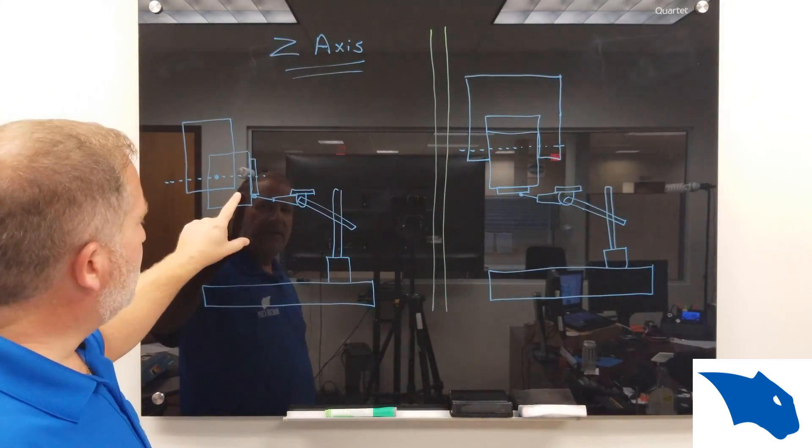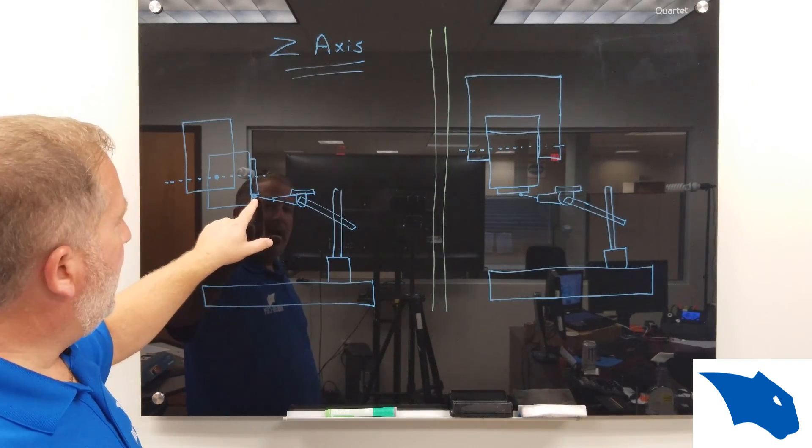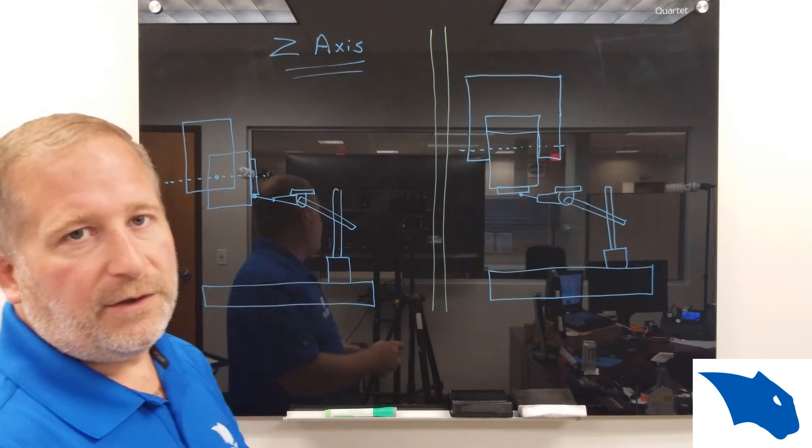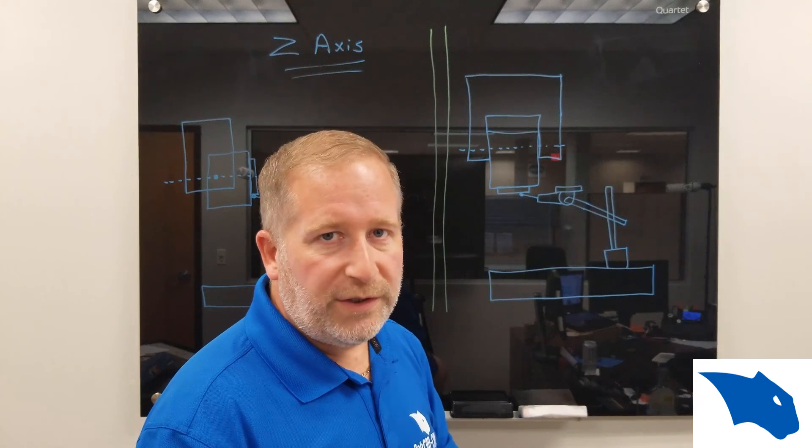and then we're going to rotate the spindle 90 degrees to the side and touch off on the diameter of that spindle. Those are the two points that we need here.